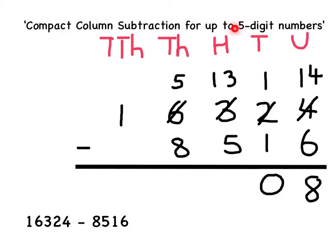In the hundreds column I've got 1,300 subtract 500. This gives me an answer of 800, which I can show at the bottom of the hundreds column by writing in an 8. Now to the thousands column.